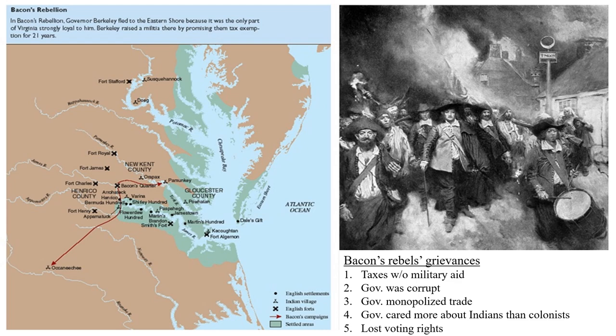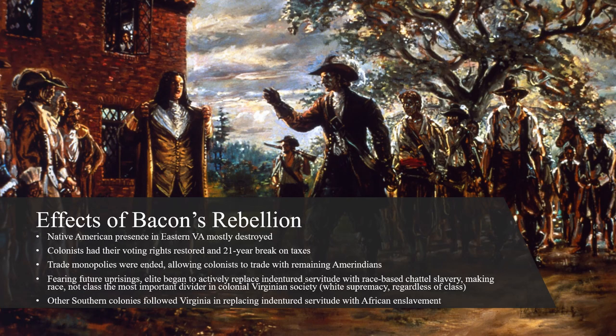The rebels' grievances were as follows: Governor Berkeley unfairly taxed rural colonists without offering them military aid against Native Americans; he was corrupt, giving political positions to his friends instead of people like Nathaniel Bacon; he monopolized the fur trade for his own benefit; he cared more about Native Americans than his own colonists; and he had taken away the voting rights of lower class colonists. The rebel colonists had defeated Berkeley, but their uprising ultimately failed when Bacon suddenly came down with an illness and died. Without a leader, the rebellion dissipated, and 23 of its leading members were executed.